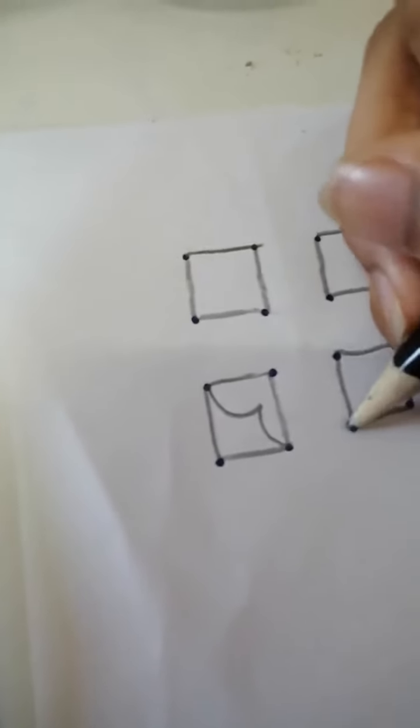Now you join it like this and now you have to do one thing. We need eraser also, actually I forgot to say you. Okay, then we have to draw like this and the rest which we don't need we have to just rub it out.